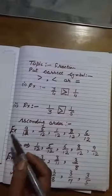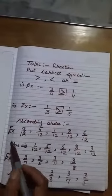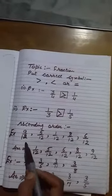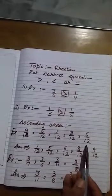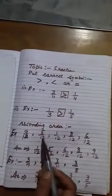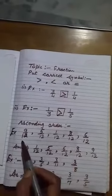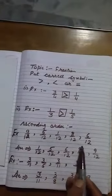Same rule we will apply in ascending order and descending order. In this first question, here there are few fraction numbers. Now arrange these numbers in ascending order: 9 upon 12, 5 upon 12, 1 upon 12, 8 upon 12, and 6 upon 12. In this case, denominator is same.